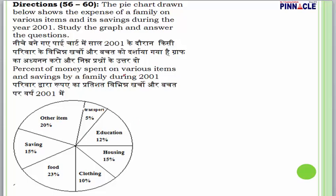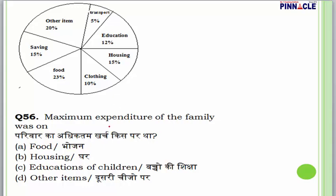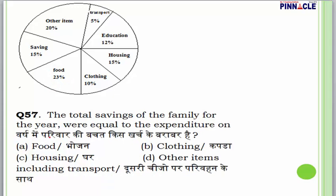Questions 56-60 are based on a pie chart showing expenses of a family on various items and savings during 2001. Question 56: Maximum expenditure of the family was on food. Answer is A. Question 57: Total savings equal the expenditure on housing, which is 15%. Answer is C.